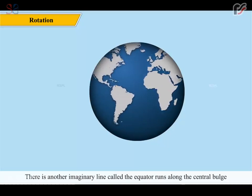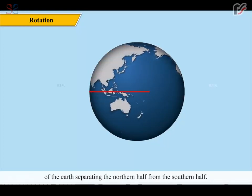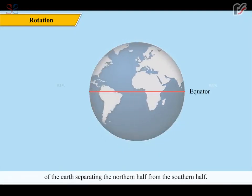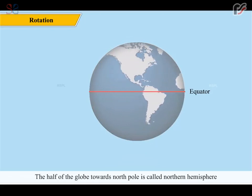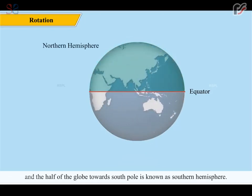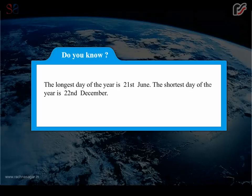There is another imaginary line called the equator, which runs along the central bulge of the Earth, separating the northern half from the southern half. The half of the globe towards the north pole is called the northern hemisphere, and the half of the globe towards the south pole is known as the southern hemisphere. Do you know? The longest day of the year is 21st June. The shortest day of the year is 22nd December.